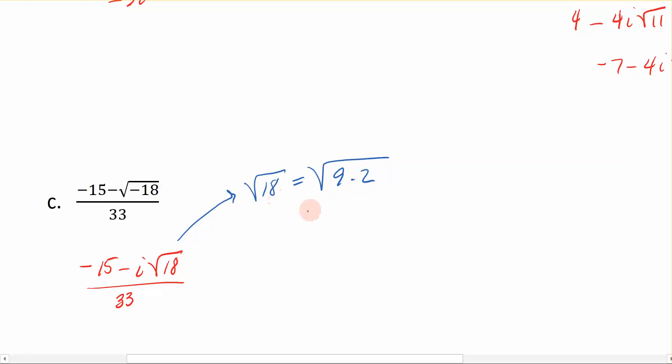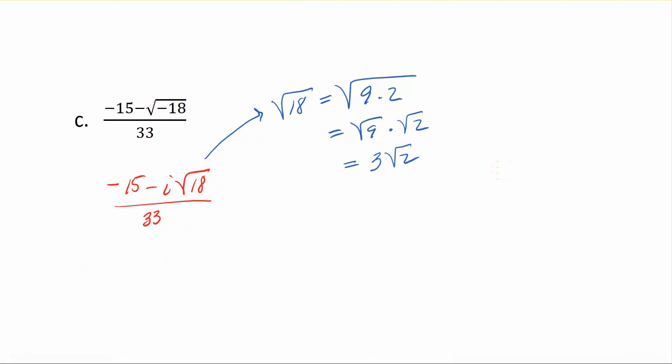We want to do that because if I rewrite this as its factors under the square root symbol, I can think of this in terms of the square root of 9 times the square root of 2. And I can take the square root of 9 and get 3 times the square root of 2. So now we have negative 15 minus 3i times the square root of 2, because the i comes down and we know that the square root of 18 can be simplified to be 3 square roots of 2, and all of that is divided by 33.